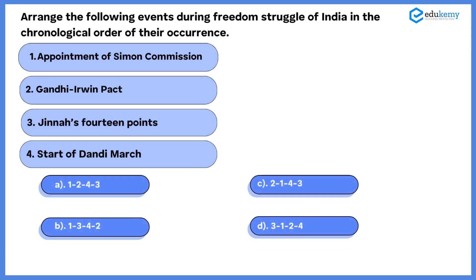The next question is based on event chronology. This type of question is increasingly seen in UPSC exams as recent trends show chronology-based questions being asked more frequently. The question is: arrange the following events during the freedom struggle of India in chronological order. The given events are: 1) appointment of Simon Commission, 2) Gandhi-Irwin Pact, 3) Jinnah's 14 points, and 4) start of Dandi March.